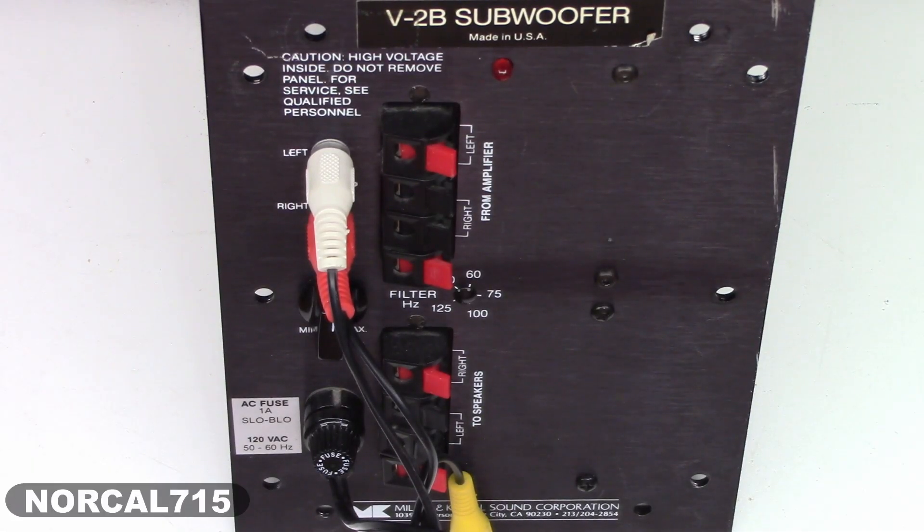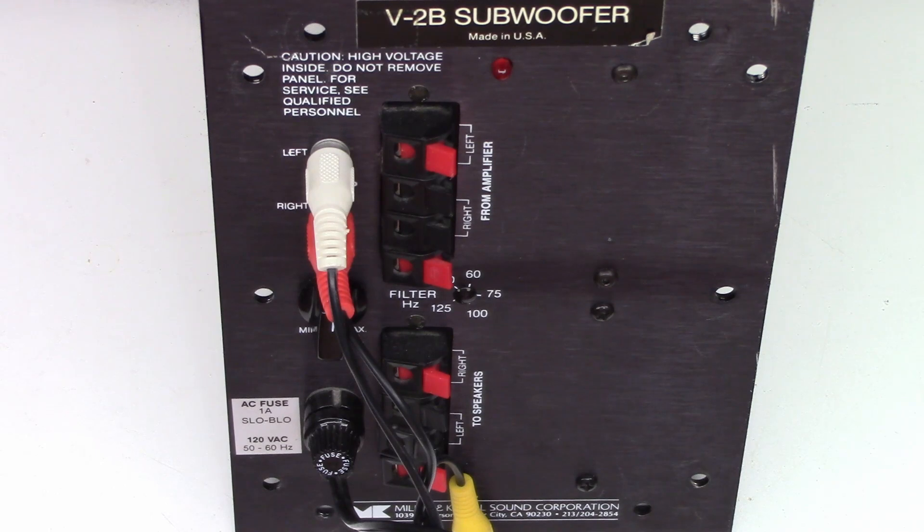Some of you may recognize this from a previous video, the Miller & Kressel Sound Corporation V2B Subwoofer. The customer said it was working absolutely perfectly, and then all of a sudden, he's getting some distortion.